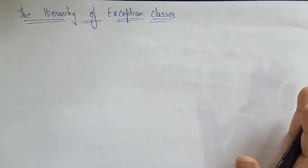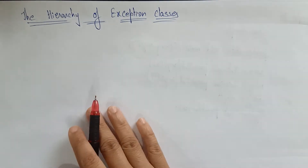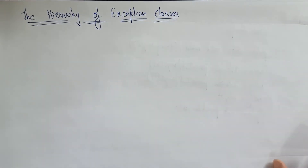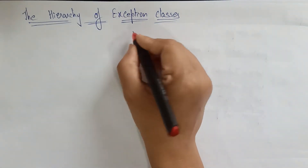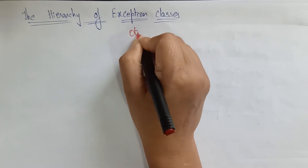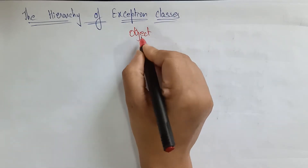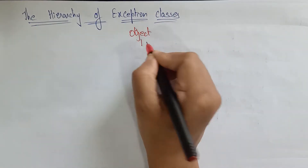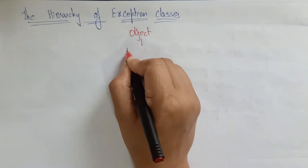Before working on the examples, try to understand the hierarchy of exception classes. What is that hierarchy of exception classes? Whatever object is there, the object is going to be throwable.